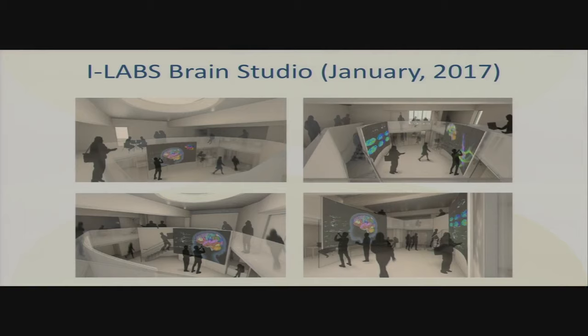We're building a brain studio at iLabs that will allow us to merge data. The MRI people, the MEG people, the EEG people are all differently trained scientists. Merging measures on an individual child to a common space is difficult but very informative for individual children. This is a studio in which we don't collect any data — this is analysis. It brings all of the scientists with different backgrounds into the same space and allows them to use very fancy visual tools to merge their findings.